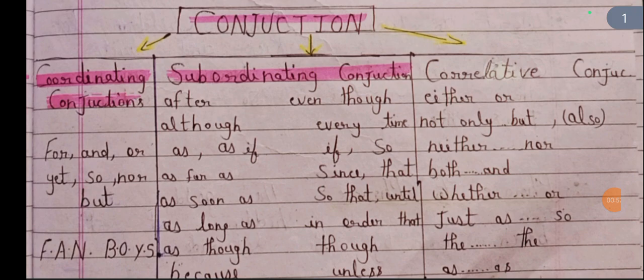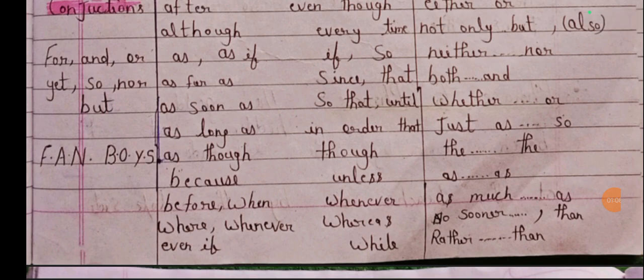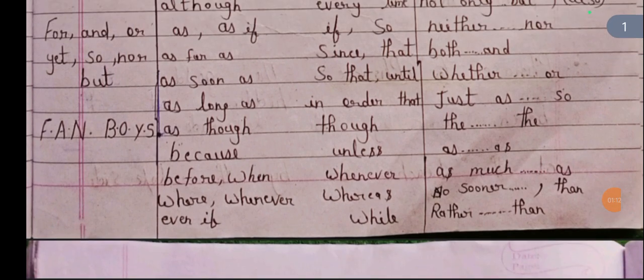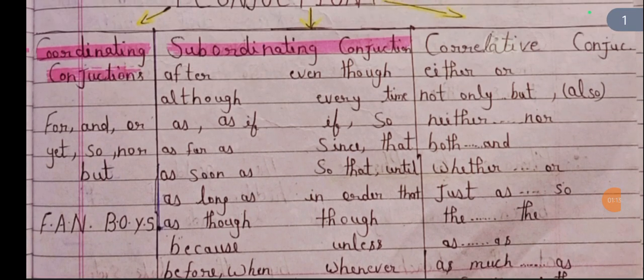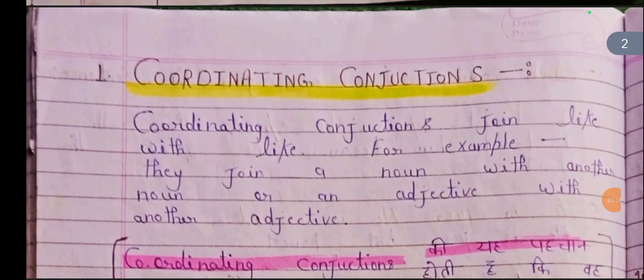This is the third type — correlative conjunctions. Examples include: either/or, not only/but also, neither/nor, both/and, whether/or, just as/so, the/the, as/as, as much/as, no sooner/than, rather/than. These are all examples of correlative conjunctions.